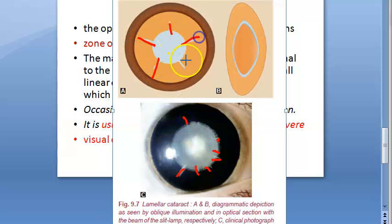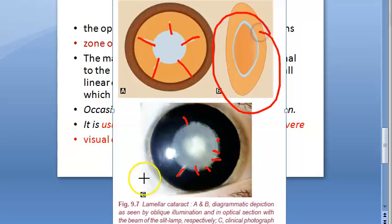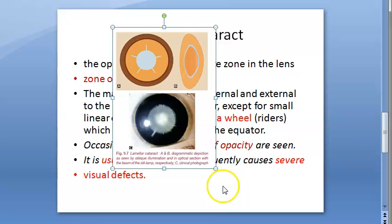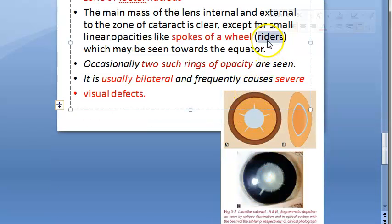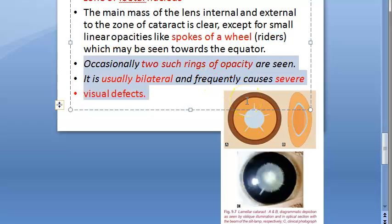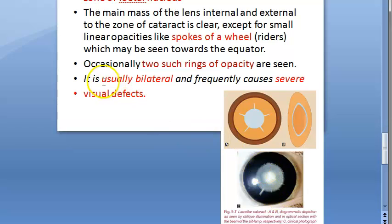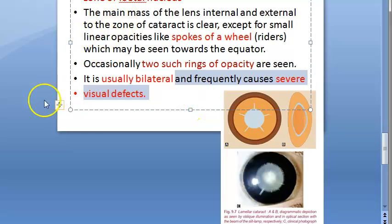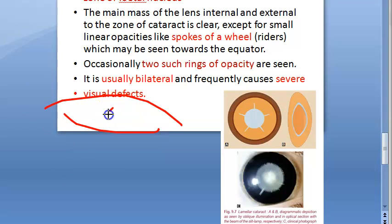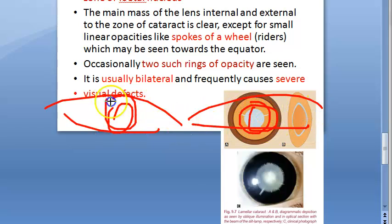Diagrammatically, the opacity occupies a central zone and internal and external to that zone everything is fine, except for the spokes of wheel. These spokes are called riders. Occasionally, two such rings of opacity are seen. The condition is bilateral — both eyes of the child are affected — and it causes severe visual defects.